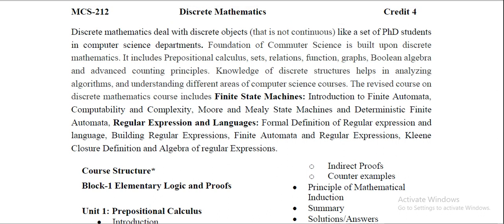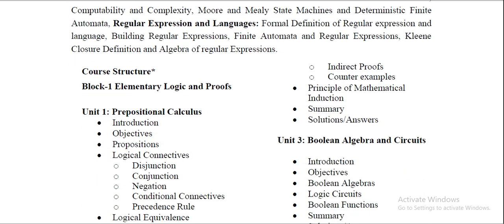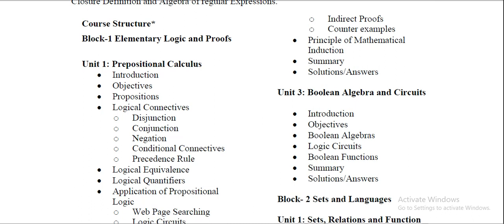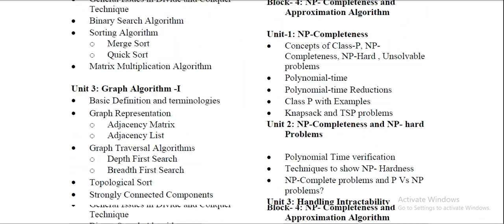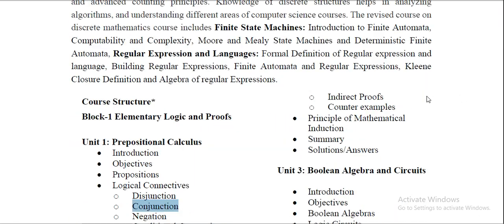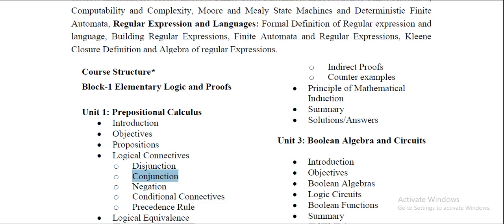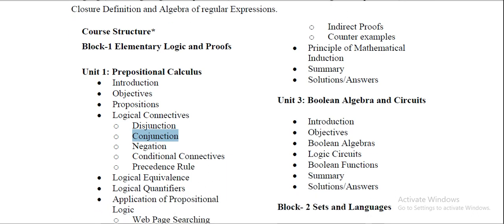So we will start with Block 1. In Block 1 it covers the propositional calculus in which you will study about the disjunction, conjunction, negation, and some conditional connective rules. So these all four topics from Unit 1 are very much important. And from Unit 2 it's your proof by induction, which is also in your algorithm syllabus or MCS-211. So the principle of mathematical induction.